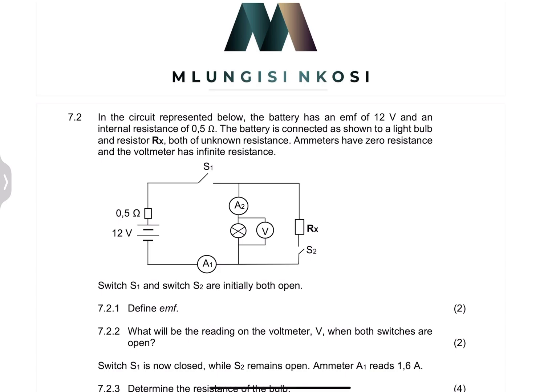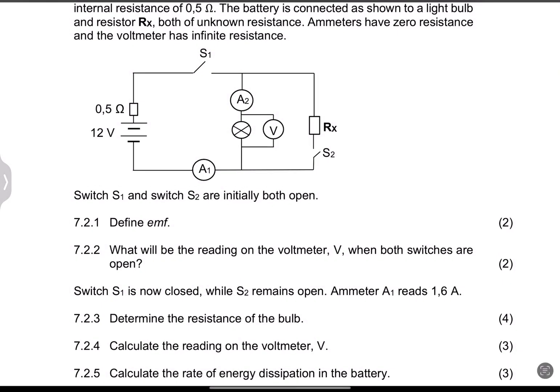So they say to us: in the circuit represented below, the battery has an EMF of 12 volts and an internal resistance of 0.5 ohms. The battery is connected, as shown, to a light bulb and resistor RX, both of unknown resistance. Ammeters have zero resistance and voltmeters have infinite resistance. Now they tell us that switches S1 and S2 are initially both open.